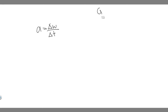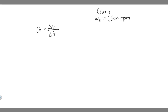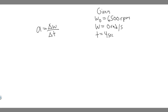Before we solve, let's write down what we're given. We know the initial angular velocity is going to be 6,500 RPM, because that's the rate it's rotating at — that's the initial rate. Then we know it slows down to rest in 4 seconds, so the final omega is going to be 0 RPM. And instead of RPM, we'll rewrite it in radians per second. The time is going to be 4 seconds.